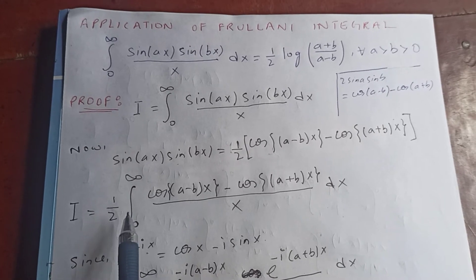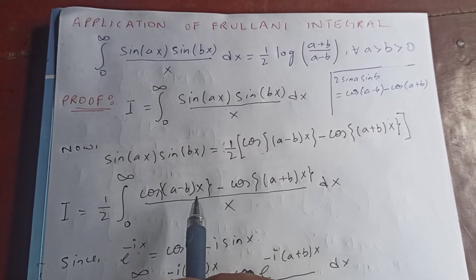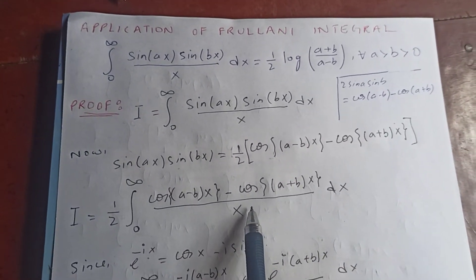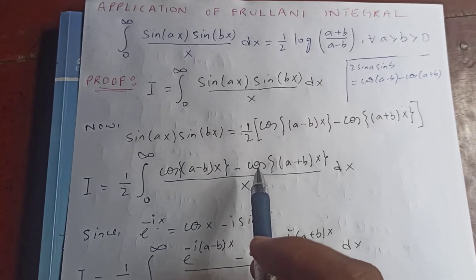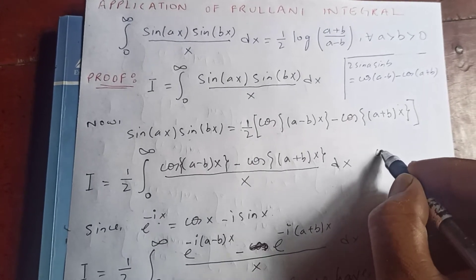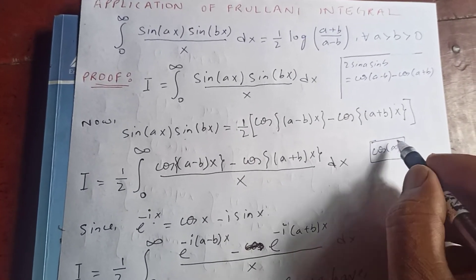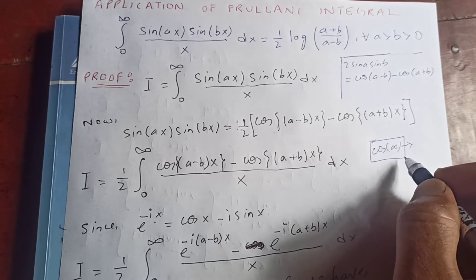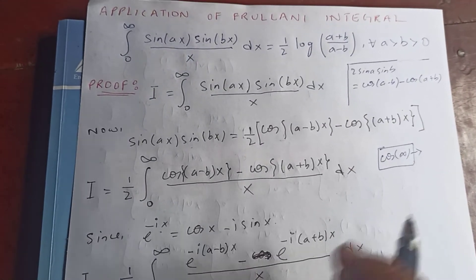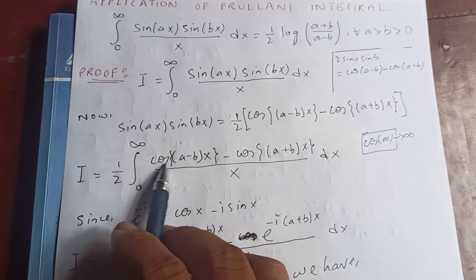Putting that into our integral, I equals half of the integral from zero to infinity of [cos((a−b)x) minus cos((a+b)x)] over x dx. Now if we calculate this directly, cos(∞) is not defined — it's oscillating — so I cannot set f(x) equal to cos(x) here.